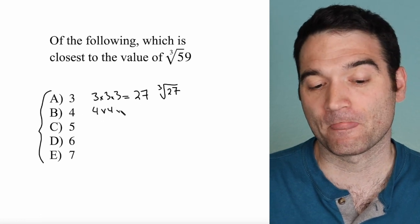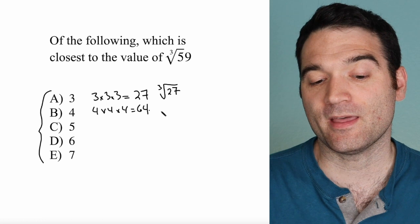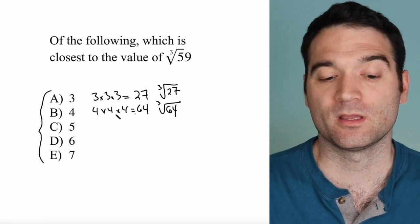4 times 4 times 4 is 64. That means that the cube root of 64 is 4.